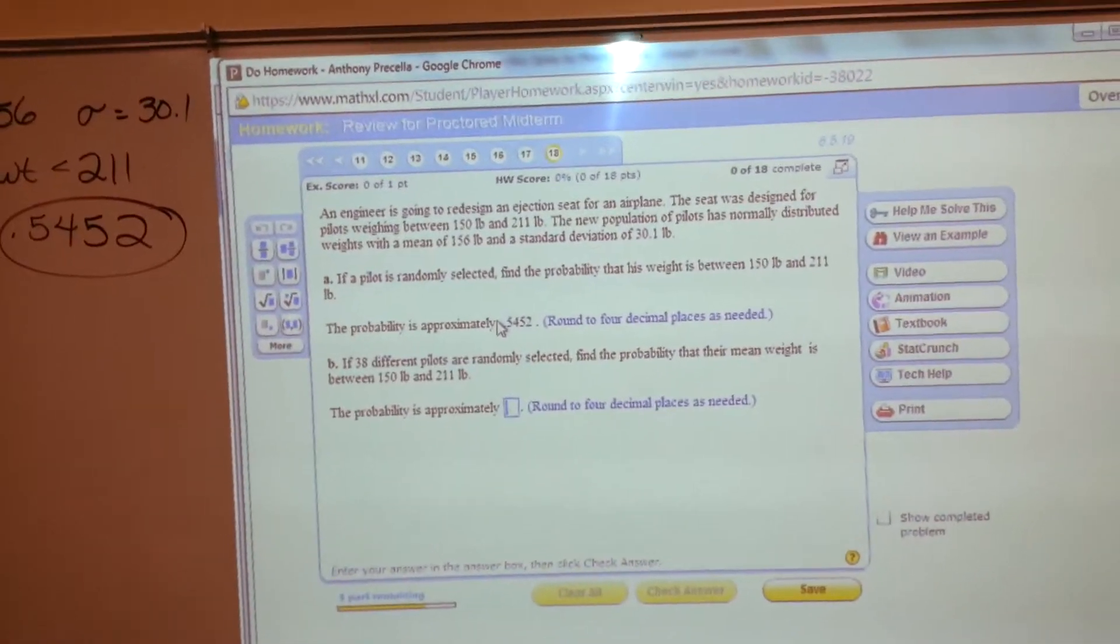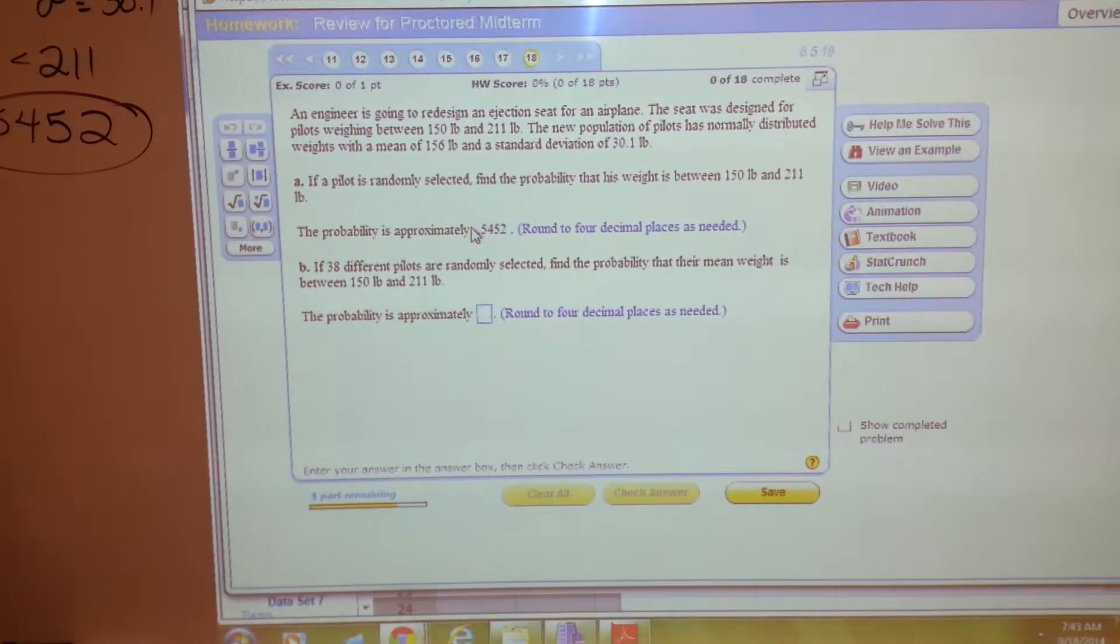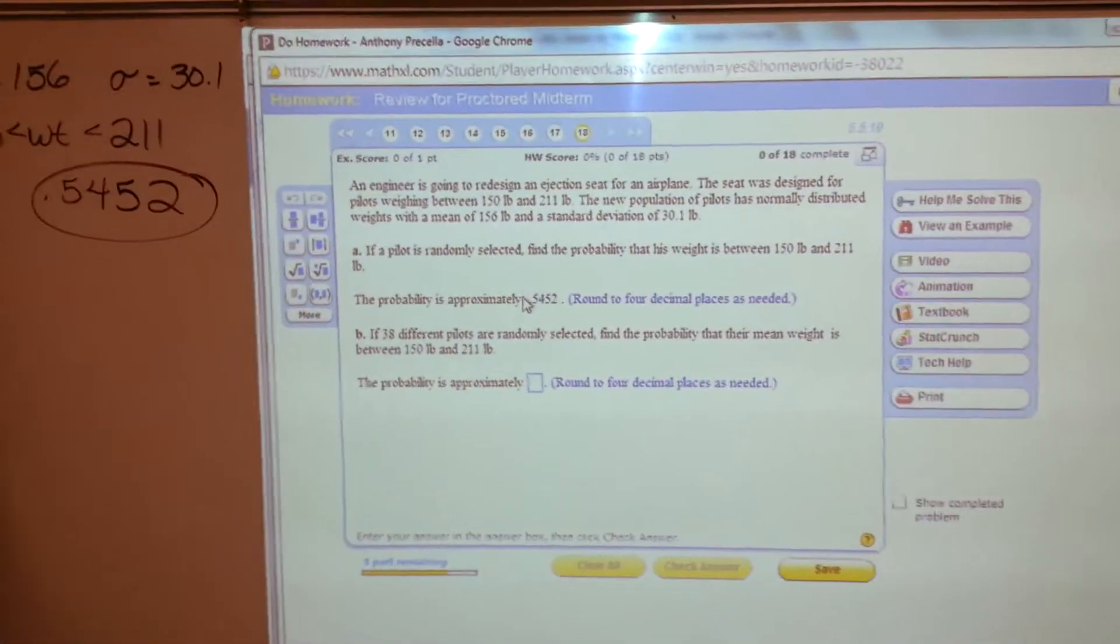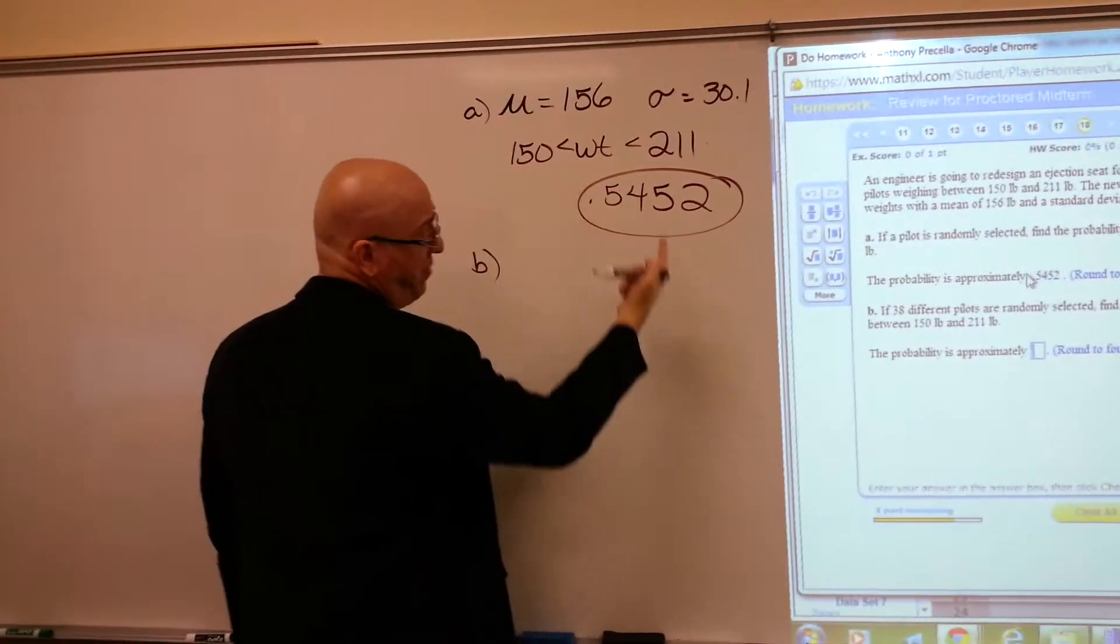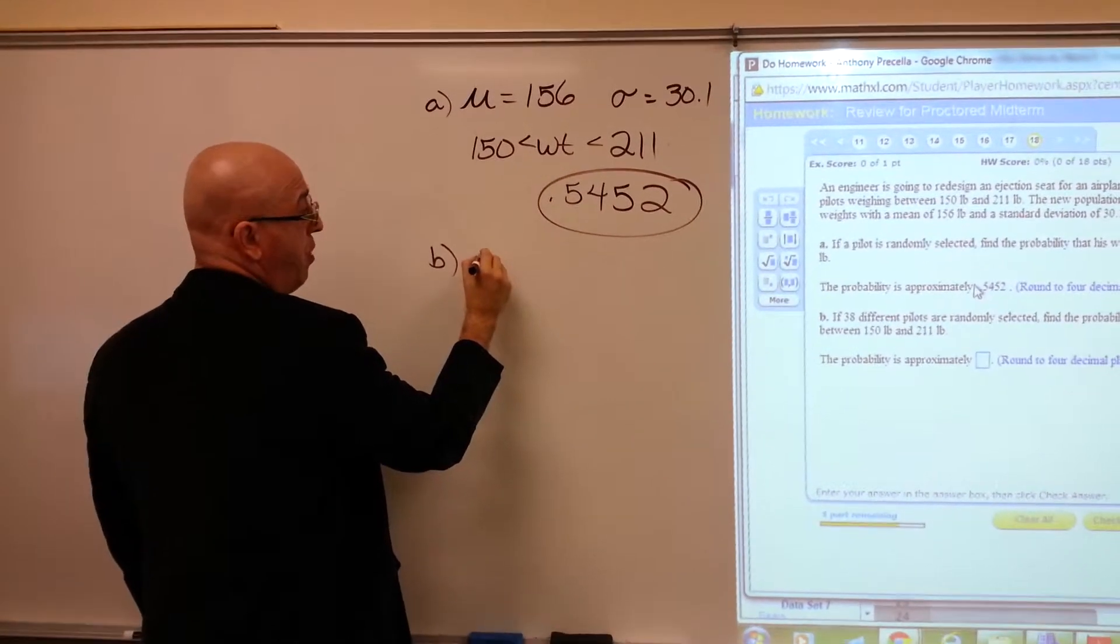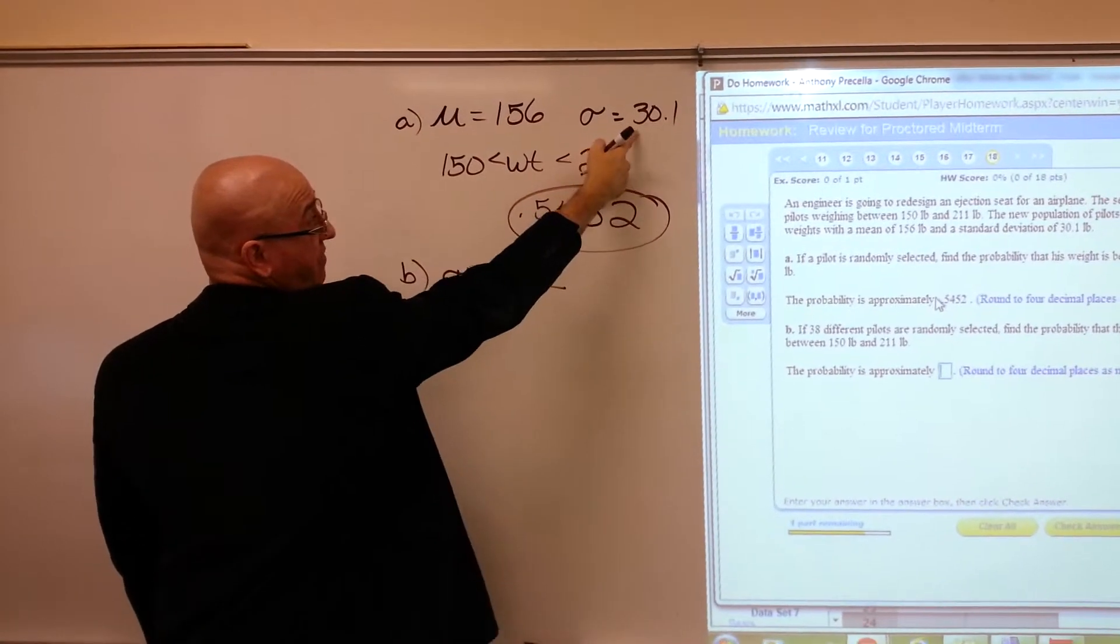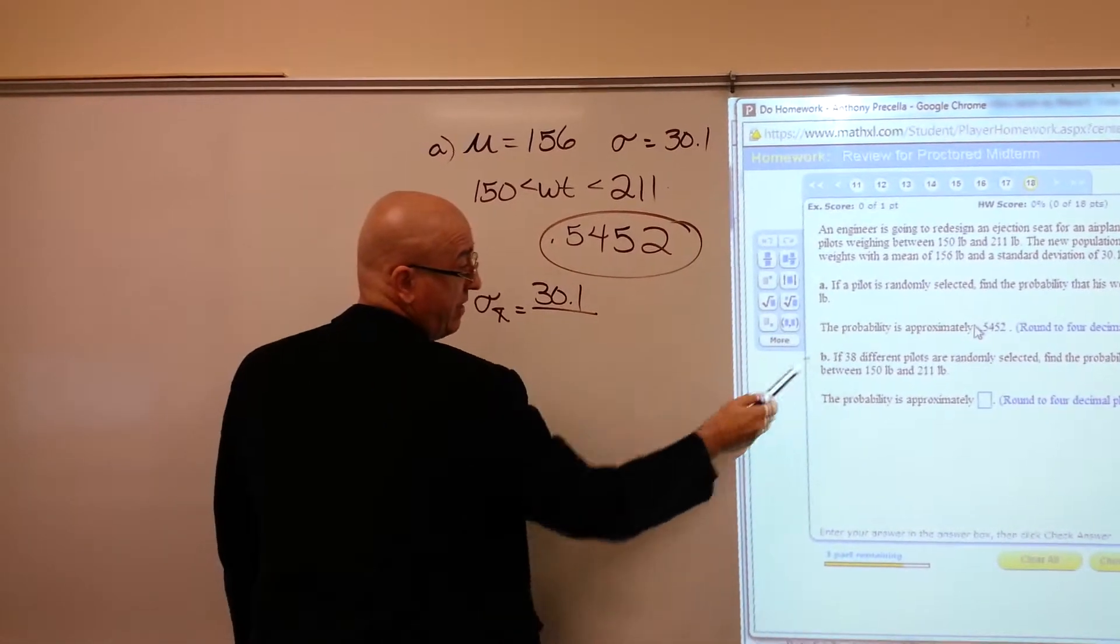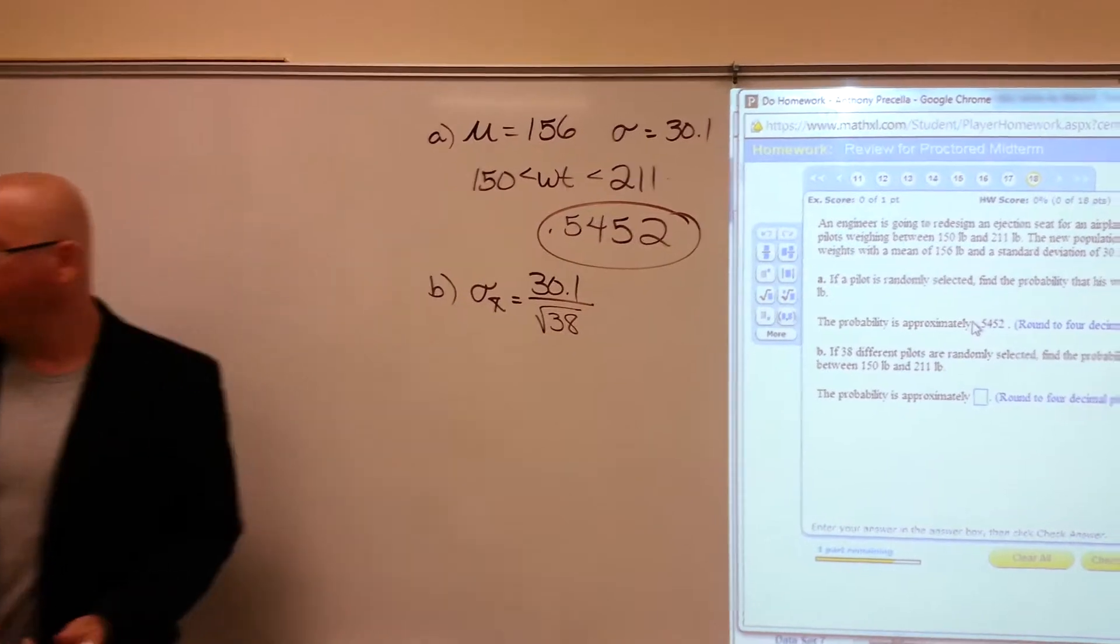Now on part B, 38 different pilots are being randomly selected. This is another central limit theorem problem because it's a sample, not just one individual pilot. So the difference is, instead of sigma being 30.1, the sigma x-bar—you've got to divide by the square root of the sample size and punch that into your calculator.